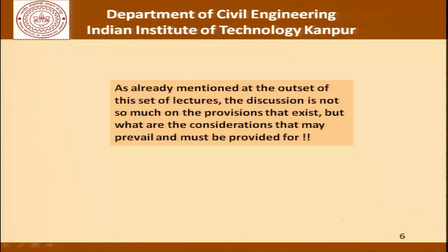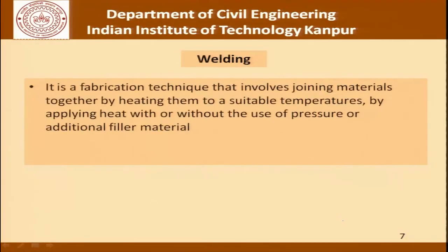So with this background, which is largely a recap of what we have talked about in the last class, let us move forward and try to interpret or understand the process of welding and the issues relating to quality control as far as this very important industrial process is concerned. Now what is welding? It is a fabrication technique that involves joining materials together by heating them to a suitable temperature, with or without the use of pressure and or additional filler material.